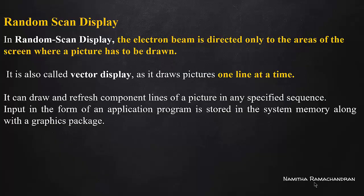In raster scan display, we have pixels across the entire screen, each with a location in memory. This is stored in a frame buffer — the pixel intensity values are mapped for every location. If you have a dark side or white side, the corresponding intensity is stored in the frame buffer as a bitmap.